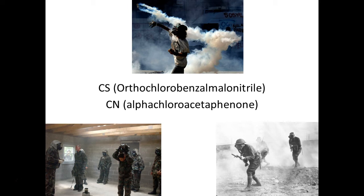CN was actually the very first tear gas used, first used in the military during World War One as a harassing agent. Eventually they switched over to CS because it was much less toxic and much more effective. CS was more potent than CN but wears off a lot quicker. CS was discovered in 1928 and replaced CN in the 1950s, with its first combat use during the Vietnam War. Many pepper spray products use a combination of OC and tear gas, but Mace branded products actually still use CN, even though it's considered a more toxic substance.